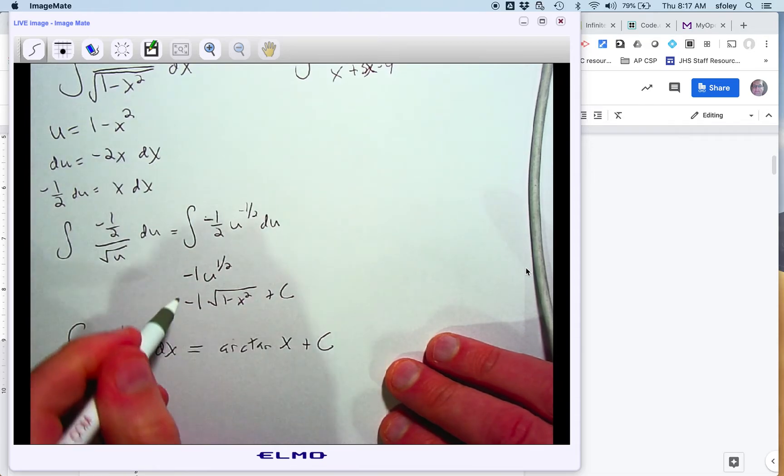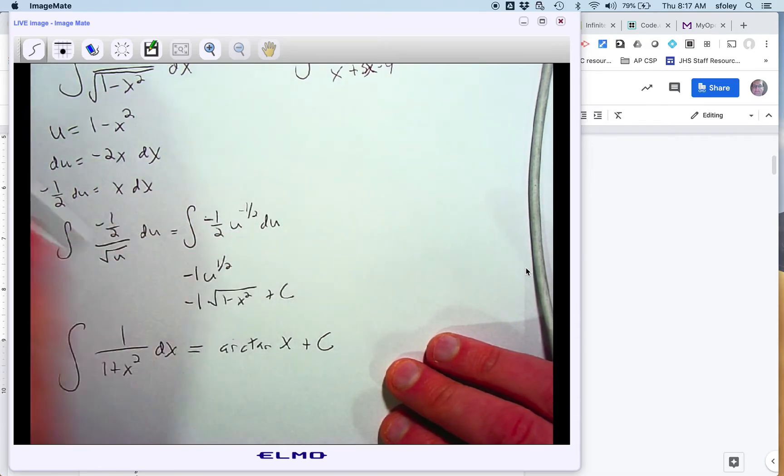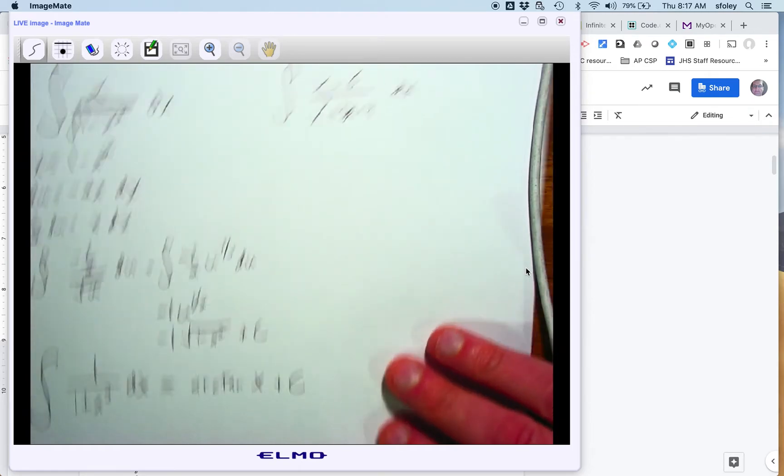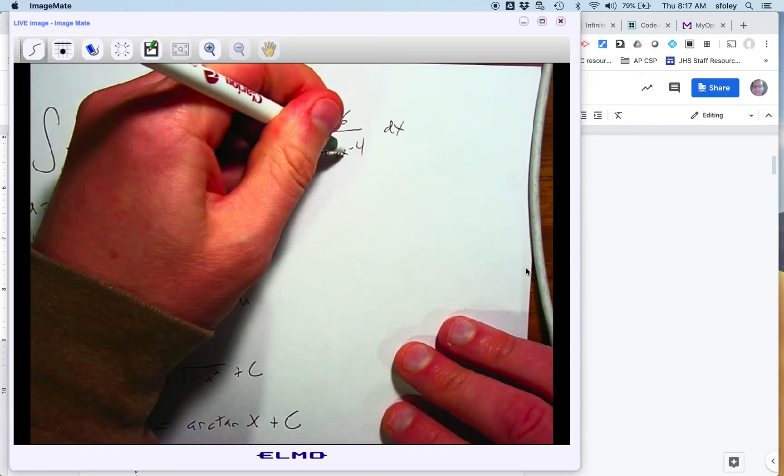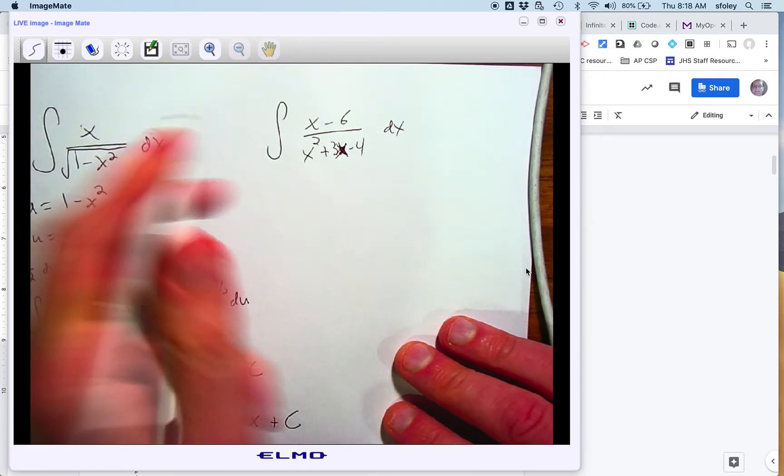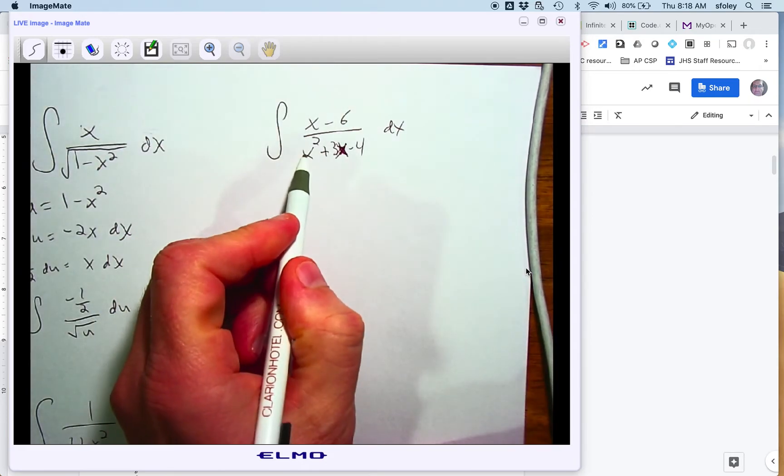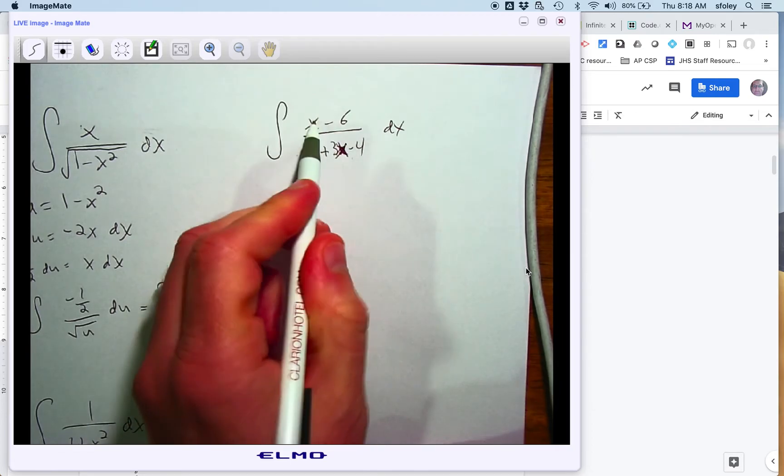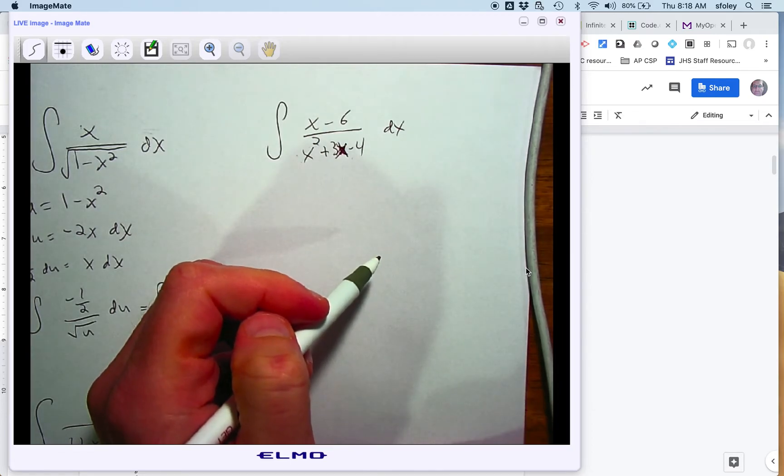And again, on all these, you can always check your answer by taking the derivative and just making sure you get back what you were supposed to. Last one for this set, this is an x. First thing you should do is again see if u substitution works. The derivative of the bottom is 2x plus 3, which I cannot easily convert to x minus 6.